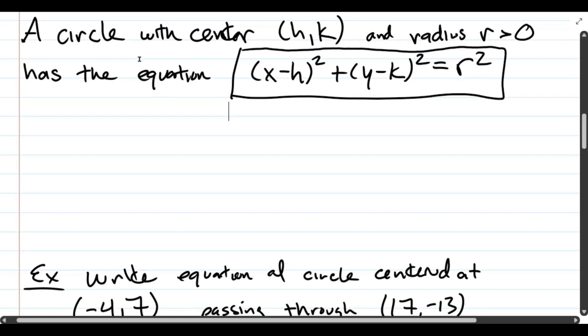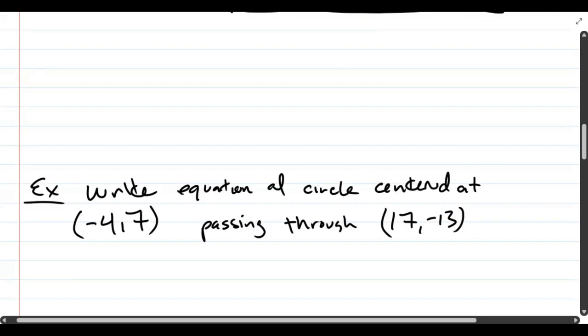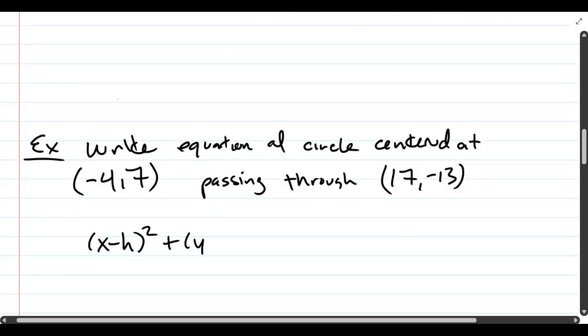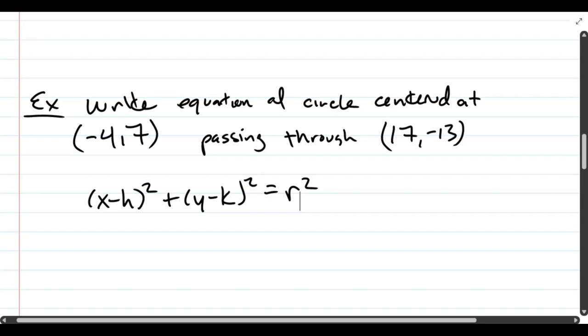Write an equation of a circle centered at negative 4, 7 passing through 17, negative 13. The very first thing I'm going to do is rewrite the circle equation. The reason I'm doing this is because I want to not make any mistakes writing this down. And I want to plug in values afterwards. So now I'm ready to plug in some values. So center is negative 4, 7. So you want to be careful. H is negative 4. K is positive 7. So X minus negative 4 is really X plus 4. Plus Y minus 7 squared equals. We don't know the radius yet. So I'm just going to leave it as R squared.